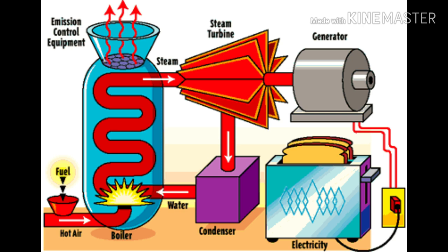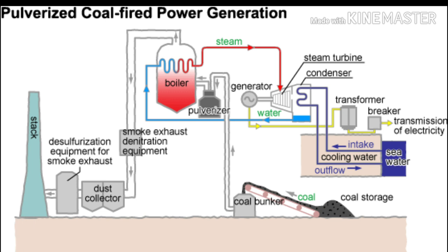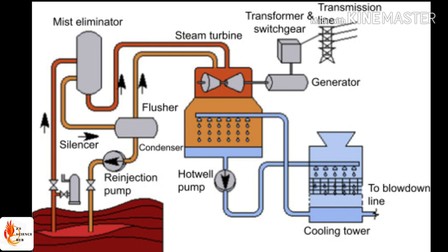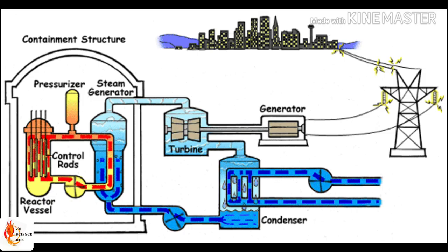A steam power plant produces electricity by burning fuel including biomass, coal, or petroleum. The steam generated from this process is fed into a turbine. The generator turns with the rotation of the turbine because it is connected to it, producing electricity.